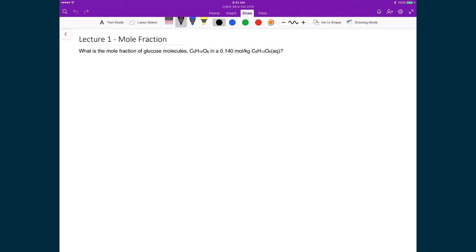In this example, what we're trying to calculate is the mole fraction of glucose that's inside a solution of glucose in water, where we note that the units here are given to us in terms of molality. We have 0.14 moles per kilogram of water of glucose inside our solution.